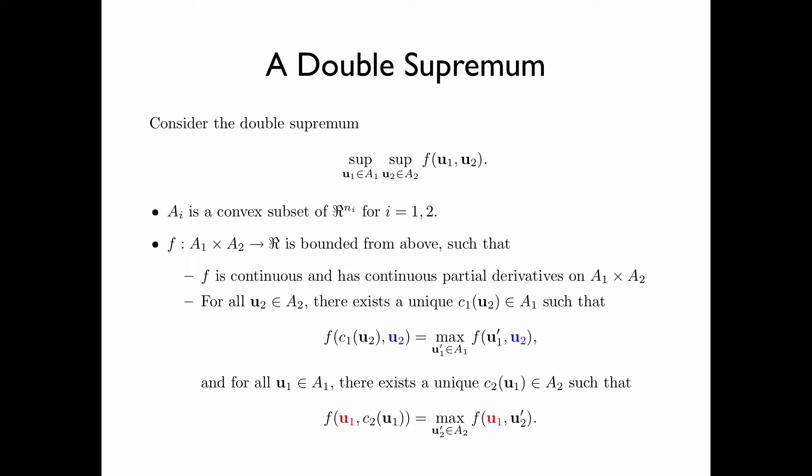Likewise, for all fixed u_1 in A_1, there exists a unique u_2 in A_2, denoted by c_2(u_1), that maximizes the value of f. That is, f(u_1, c_2(u_1)) is equal to the maximum of f(u_1, u_2') over all u_2' in A_2.